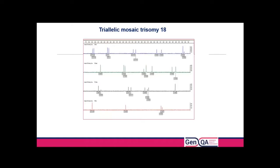This is an example of mosaicism for trisomy 18. In two markers there are three different alleles but they're not in a 1:1:1 ratio — one peak is smaller than the other two, and the ratio of the two larger peaks is in the 1:1 ratio. So you've got two cell lines: one with two of the alleles and one with all three. You can approximate the level of mosaicism by looking at the ratio of the trisomic cell line to the disomic cell line, but that's only representative of the sample you're looking at, not necessarily of the tissues in the fetus.